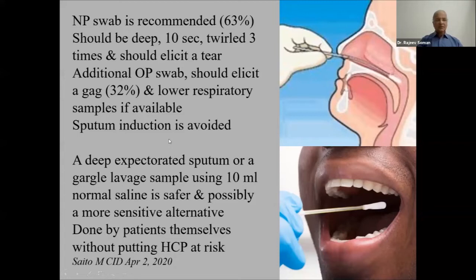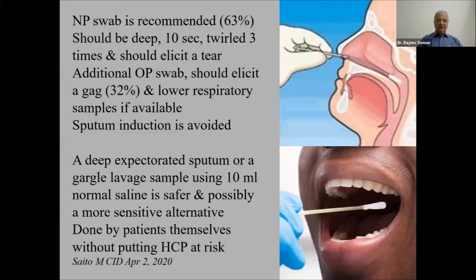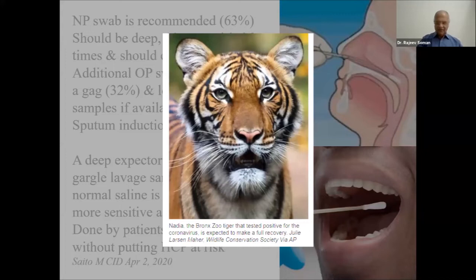Sputum induction is avoided because it is an aerosol-generating procedure. In the absence of a good specimen, alternatives include deeply expectorated sputum or a gargle lavage using 10 ml saline — probably safer, possibly more sensitive, and can be performed by the patient themselves without putting healthcare professionals at risk. Incidentally, Nadia the Bronx Zoo tiger tested positive for COVID-19 — one wonders how they obtained the nasopharyngeal swab from that beast.